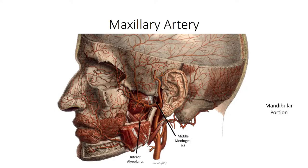Just distal to the middle meningeal artery, the inferior alveolar artery projects inferiorly, passing through the mandibular foramen to supply the bone and teeth of the lower jaw. The artery emerges once again through the mental foramen to supply vasculature to the chin.